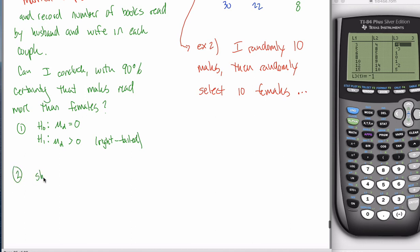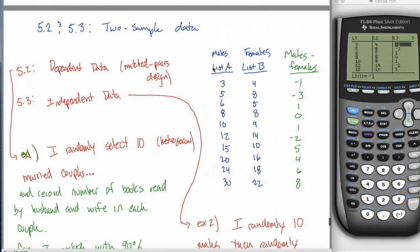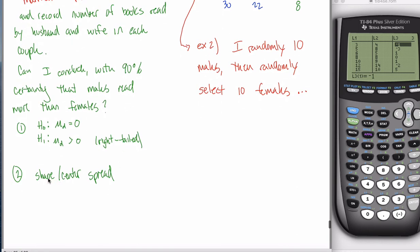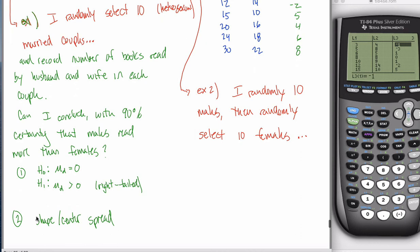Step two is shape, center, and spread — short answer: you can skip it in this section. They get pretty complicated in the coming sections with ugly formulas, so this is a logical place to cut off shape, center, and spread. I'll give you that the shape is approximately normal, either by assumption or because the sample size is large enough for the central limit theorem. The center will always equal zero because we assume the null hypothesis is true. The spread is just the standard deviation of the differences.